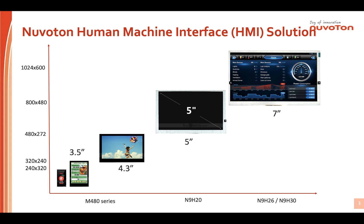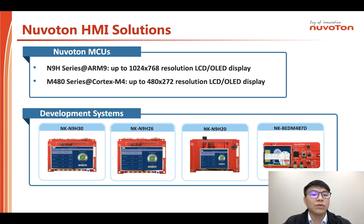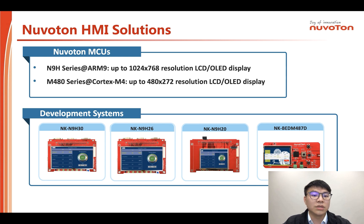The resolution goes up to 1024 by 768. For HMI solutions based on EMWIN, NeuVertone has already provided three product series. The first is the N9H series, based on ARM9 core, with up to 300MHz core speed. It contains three sub-series: NeuVertone H20, NeuVertone H26, and NeuVertone H30, which supports up to 1024 by 768 resolution display — a high-end resolution.